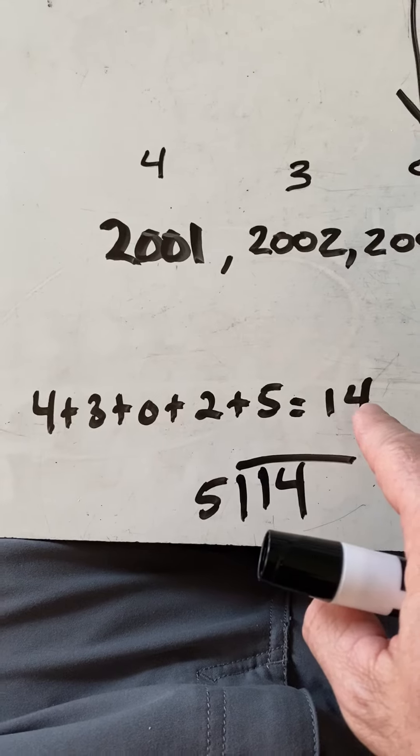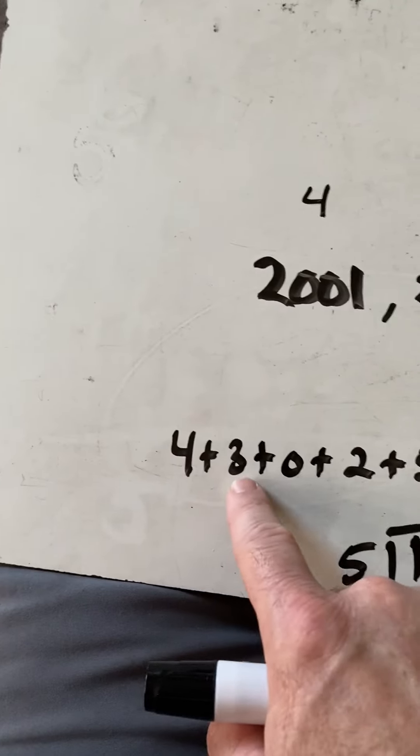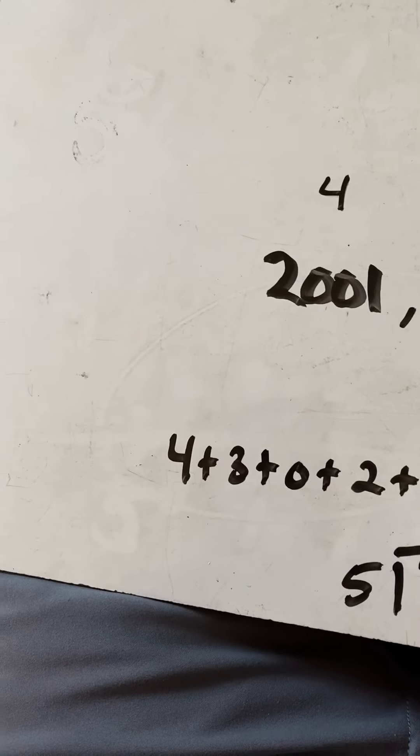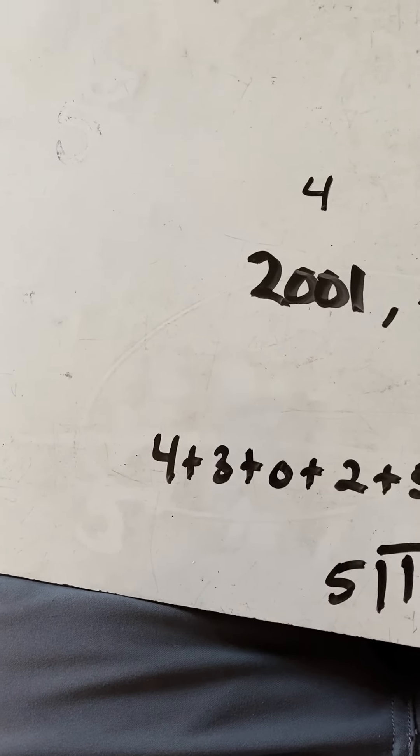So now, 14 divided by 1, 2, 3, 4, 5. And that gives me 14 divided by 5 is 2.8.